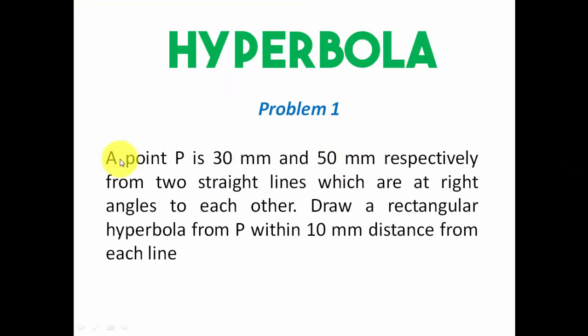A point P is 30 mm and 50 mm respectively from two straight lines which are at right angles to each other. Draw a rectangular hyperbola from P within 10 mm distance from each line. So we have two straight lines at an angle of 90 degrees with each other and there is this point P whose location with respect to these two lines has been given to us.